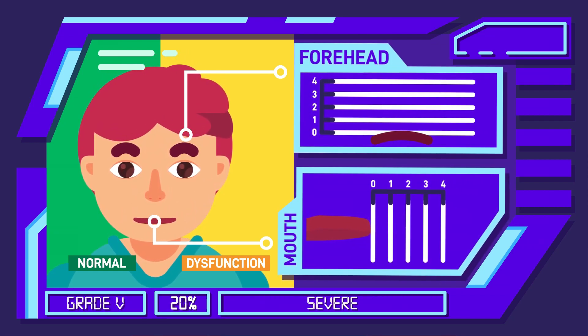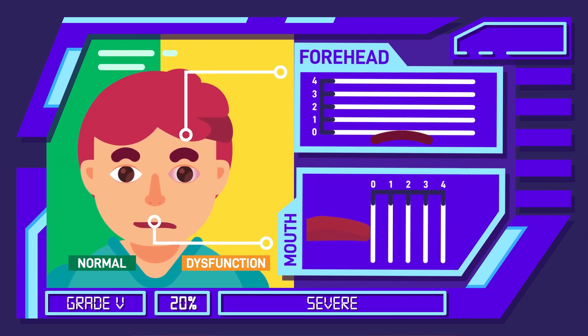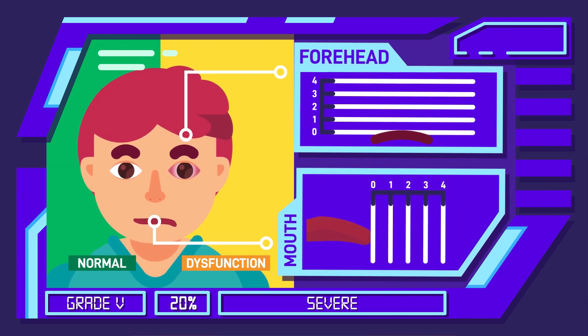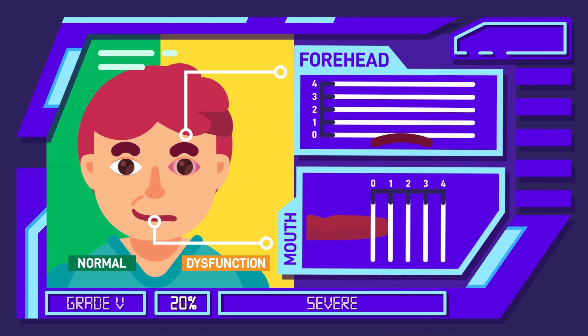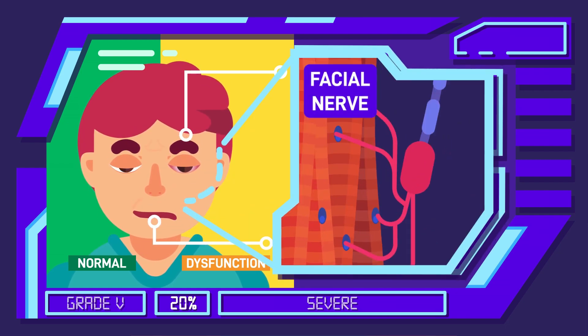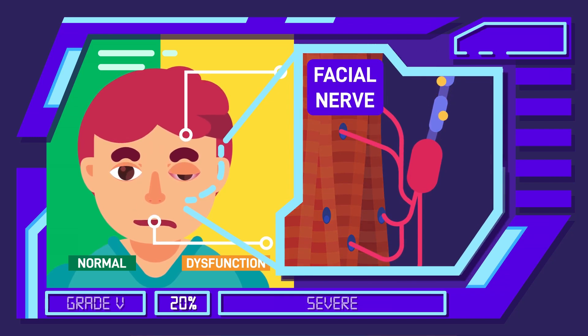The next grade, grade 5, covers people with severe dysfunction. Their faces already show asymmetries even at rest. Their forehead stays paralyzed and their mouth only shows a slight movement. Their eyes stay half open. Synkinesis no longer occurs as the facial muscles are too weak for any additional movement.